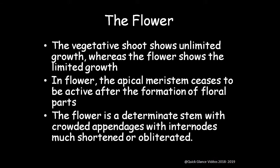The vegetative shoot shows unlimited growth, whereas the flower shows limited, determinate growth. It condenses to form a flower and the growth is limited. In the flower, the apical meristem ceases to be active after formation of floral parts. The flower is a determinate system with crowded appendages, with internodes very short or obliterated.